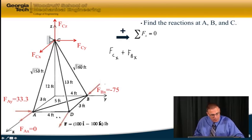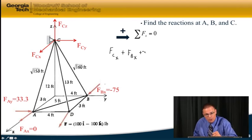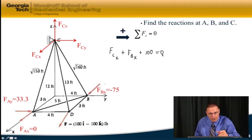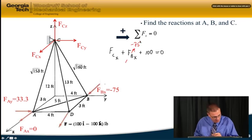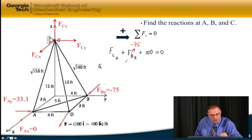And we get, we have F_CX for this one. And then we're going to have plus F_BX. And the only other one we have is on this given force F, there's 100 pounds in the I direction. So that's plus 100 equals zero. I can substitute in for what I found, the value of F_BX as being minus 75. And our result is F_CX equals 25.